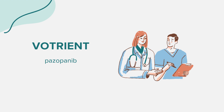It's crucial to be aware that Votrient should not be used if you have severe liver disease, as it can lead to severe or life-threatening liver complications. Regular blood tests are necessary to monitor liver function. Symptoms such as nausea, vomiting, upper stomach pain, loss of appetite, fatigue, easy bruising, dark urine, or jaundice — yellowing of the skin or eyes — should be reported to your doctor immediately.